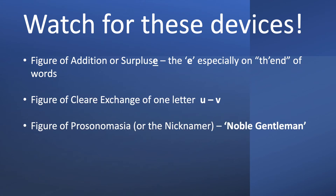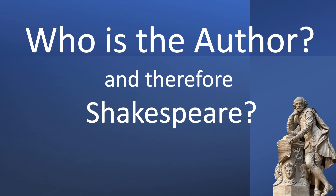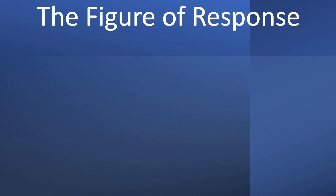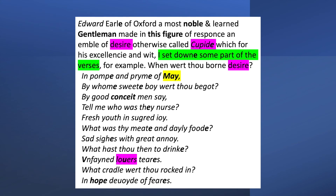The U/V interchange, the nickname of noble gentleman, and the misnomer of Cupid. So who's the author and therefore Shakespeare? The figure of response answers that — it is Edward, Earl of Oxford. And there are all of your devices in one culmination.